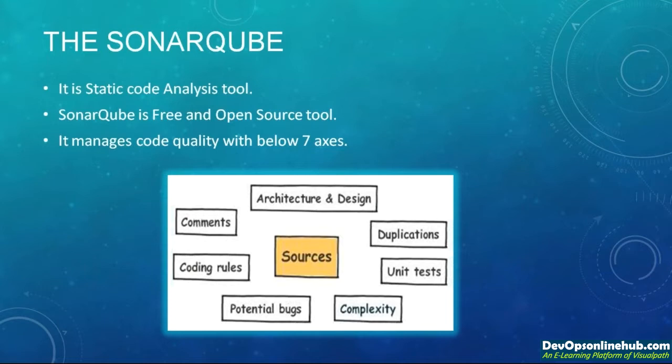As we learned in the previous section, SonarQube manages all seven axes of code quality: architecture and design, duplications, unit test, complexity, potential bugs, coding rules, and comments and documentation. All seven parameters or axes are given their reports of code quality in percentage, which we will be configuring in the SonarQube tool.